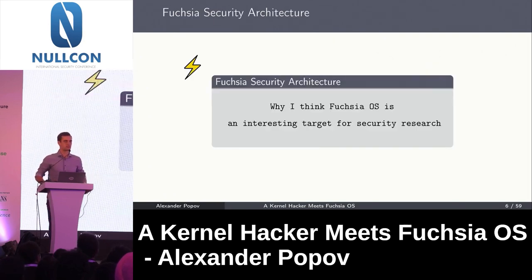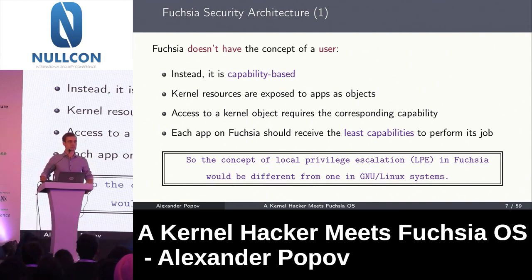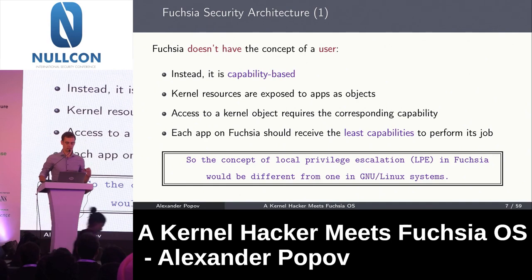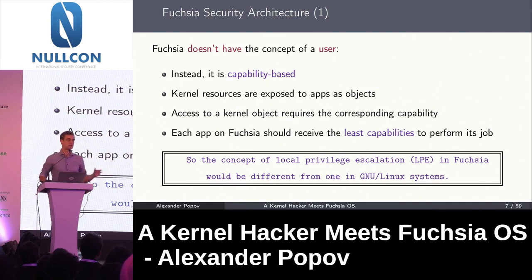I see several aspects in Fuchsia's security architecture which make this system an interesting target for security research. First, Fuchsia doesn't have the concept of a user. Instead, it is a capability-based system, so kernel resources are given to applications which have the corresponding capabilities. The main idea is to have least capabilities for each application to do the job. This is important because the concept of local privilege escalation from the Linux kernel doesn't work for Fuchsia, since there is no root user.